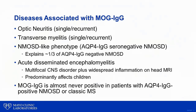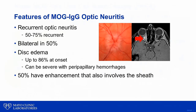MOG antibodies and aquaporin-4 antibodies very rarely coexist, and patients with classic multiple sclerosis are not typically positive for MOG antibodies. The most common symptom of MOG-associated disorder is optic neuritis. Features favoring a MOG optic neuritis diagnosis include optic disc edema, bilateral optic neuritis, and recurrent optic neuritis. Recurrent optic neuritis occurs in about 50% of patients, with some cases being both steroid-responsive and steroid-dependent, resembling what has been termed chronic relapsing inflammatory optic neuropathy.